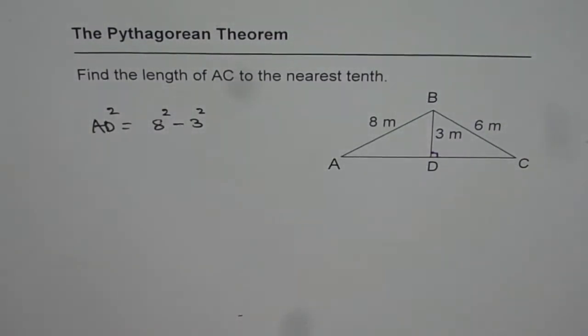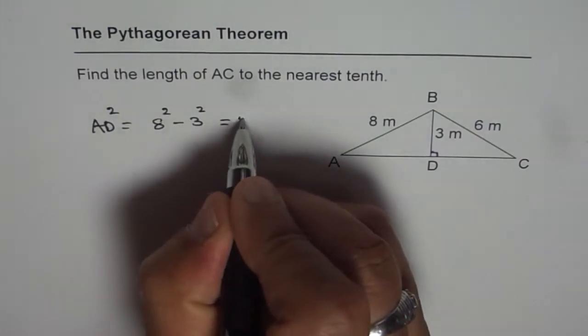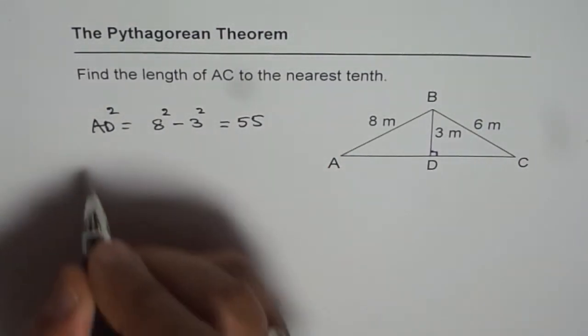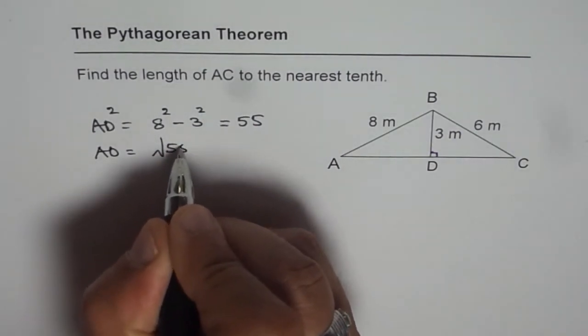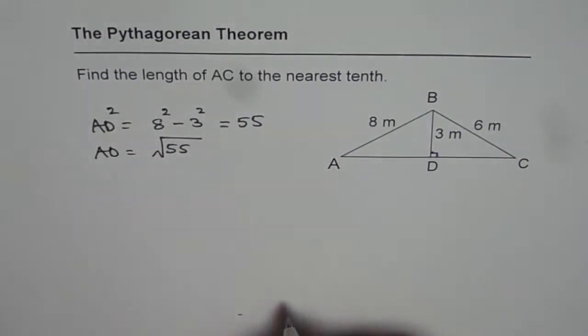Which is equal to 64 minus 9. So let us figure it out. 64 minus 9, which is equal to 55. So AD equals square root of 55. Square root of 55 is equal to approximately 7.42.